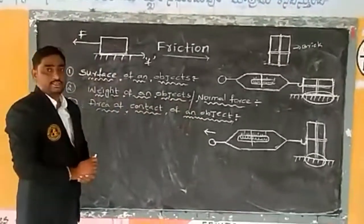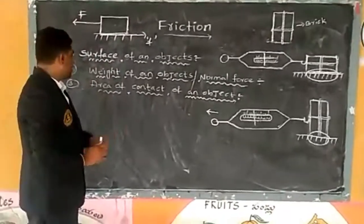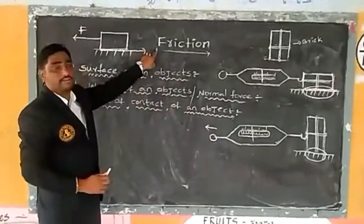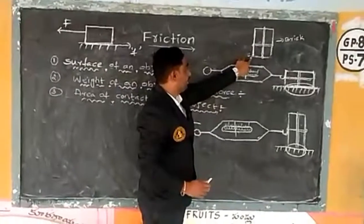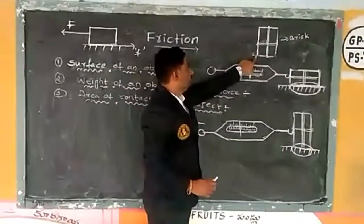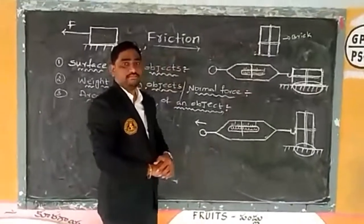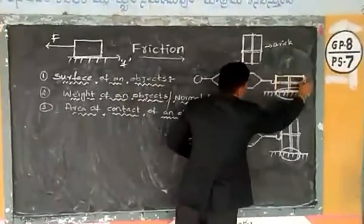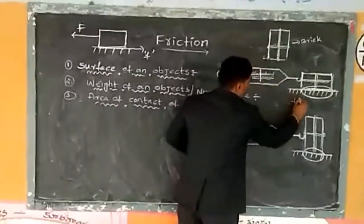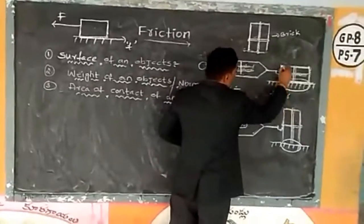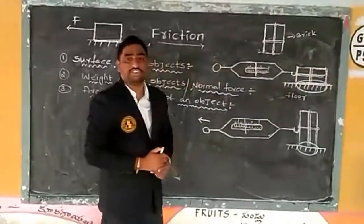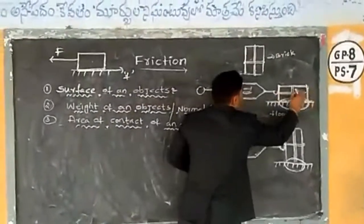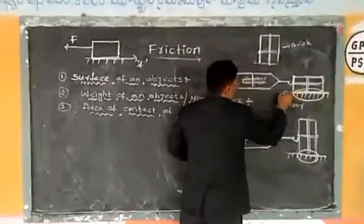Dear students, in order to explain the factor of area of contact of an object and how it is independent of the rate of friction, let me take a brick. We need to tie a string around the brick, then place that brick over a horizontal surface of the floor with the string tied around it.